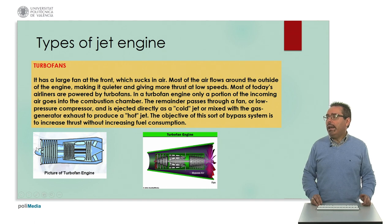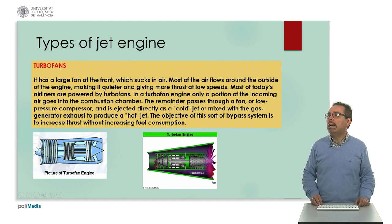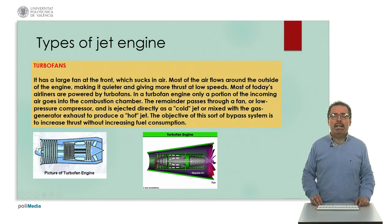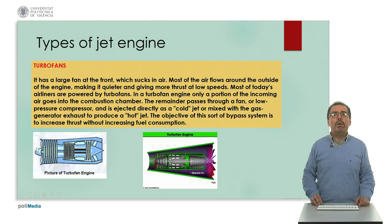The remainder of the air passes through a fan or low-pressure compressor and is ejected directly as a cold jet, or mixed with the gas generator exhaust to produce a hot jet. The objective of this process of bypassing the air is to increase thrust without increasing fuel consumption — a feature that is extremely important in commercial airliners, for example. Here we have two pictures of a typical turbofan engine, which is the most typical in commercial aircraft.